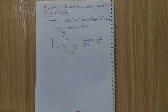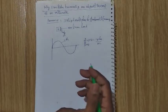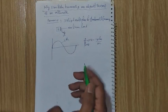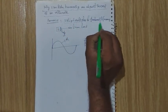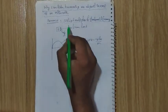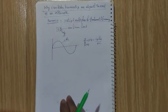In this video I explain why even harmonics are absent in the generated EMF of an alternator. Harmonics means integral multiples of fundamental frequency. Another definition: harmonics are unwanted frequencies which are superimposed on the fundamental waveform, creating a distorted waveform.